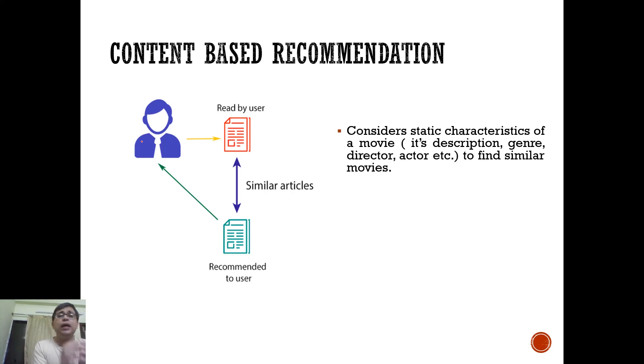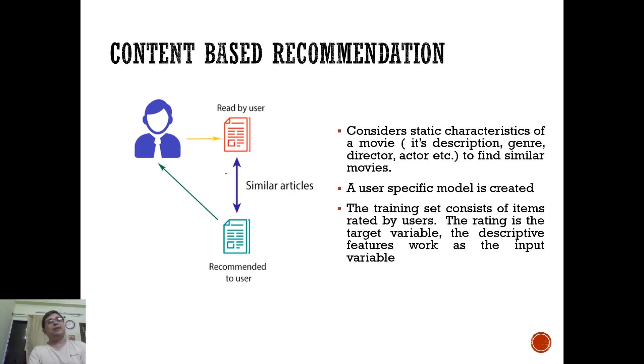Let's look at some of its advantages and disadvantages. So first thing is, it considers static characteristics of a movie or any product, its description, genre, director, actor, etc., to find similar movies. And a user specific model is created. Because the training set in your machine learning terminology consists of items that are rated by this particular user, and the rating is the target variable. The distinctive features work as the input variable. So when you'll apply for a new product, you can understand that whether this person is going to like this or not.